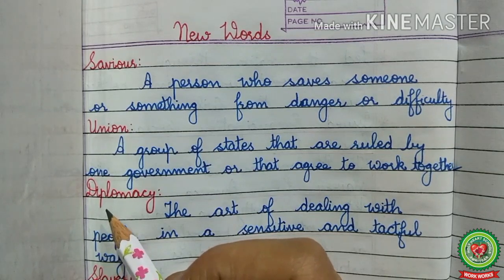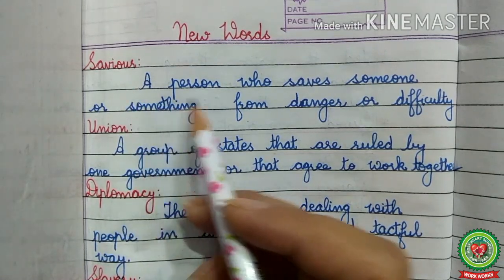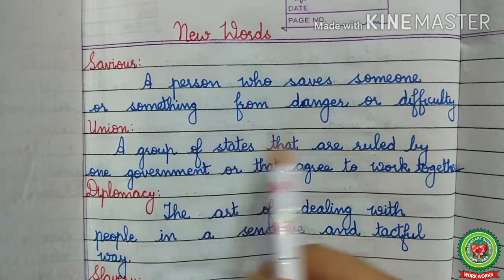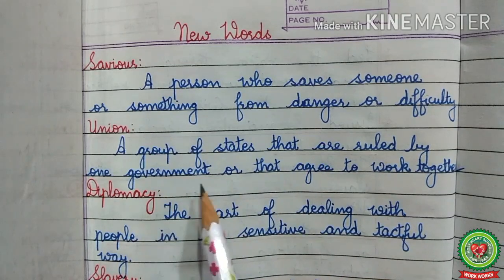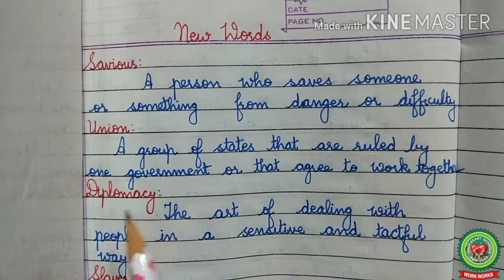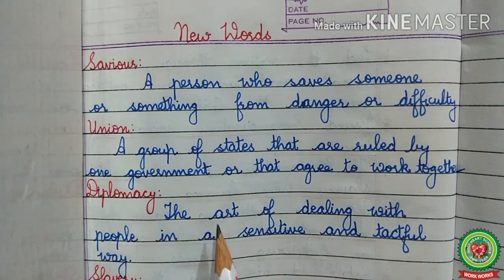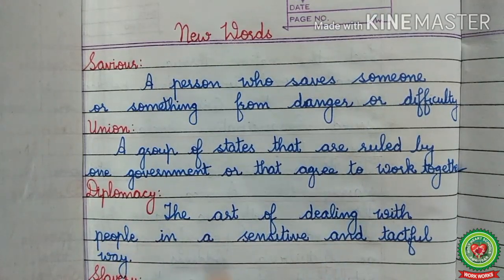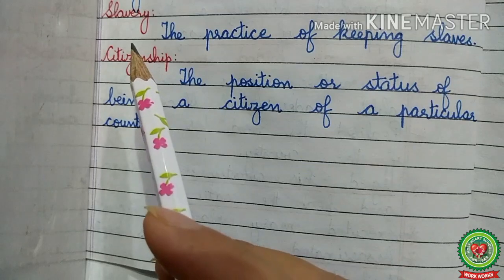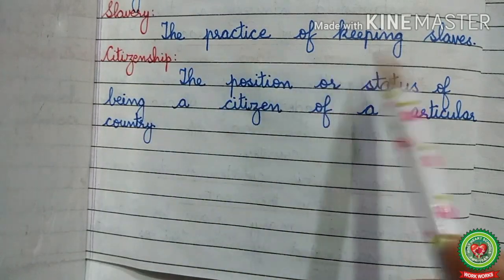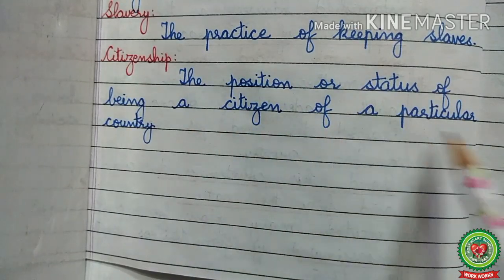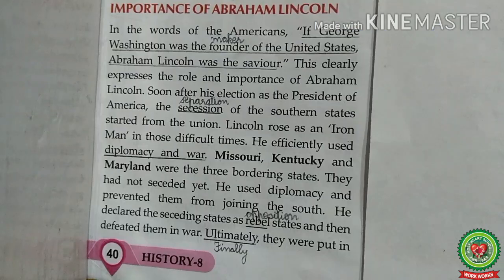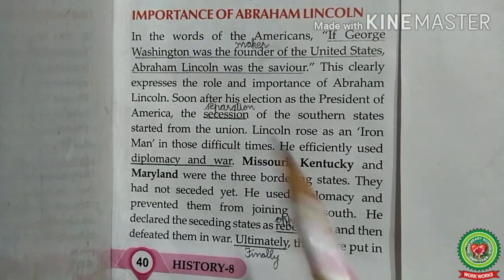Now let us discuss new words related to today's topic. Savior: a person who saves someone or something from danger or difficulty. Union: a group of states that are ruled by one government or that agree to work together. Diplomacy: the art of dealing with people in a sensitive and tactful way. Slavery: the practice of keeping slaves. Citizenship: the position or status of being a citizen of a particular country.